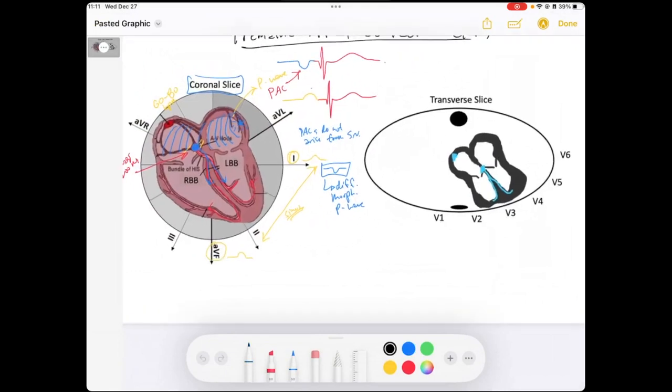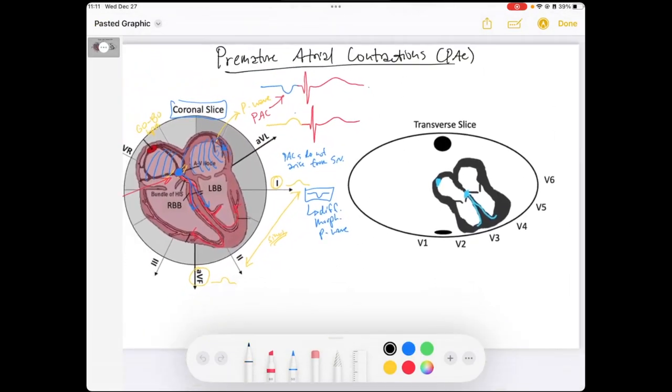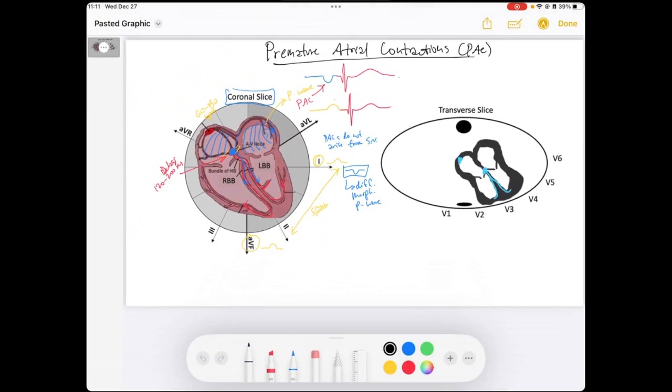And so, if I was going to maybe draw out a rhythm that was similar to what you'd expect a PAC would look like, it would be something like this, where you have a P, QRS, T, P, QRS, T. And then you have a quick P wave, P, QRS that looks the same, T, and then have a little bit of a pause, and then we're back to our normal P, QRS, T.